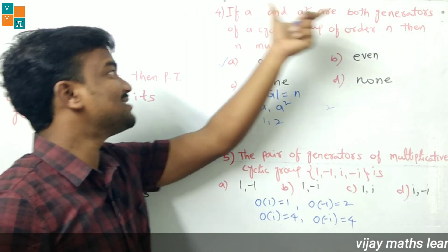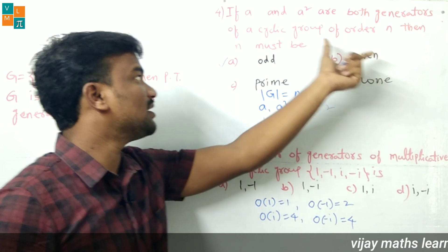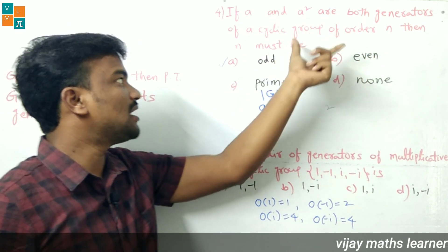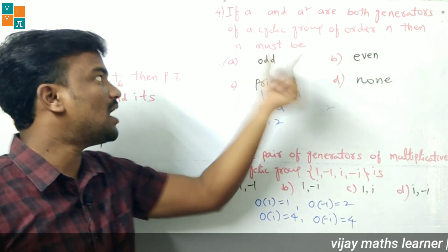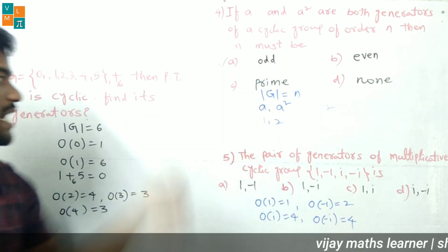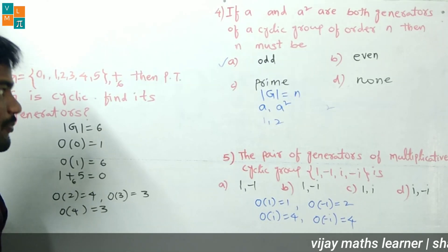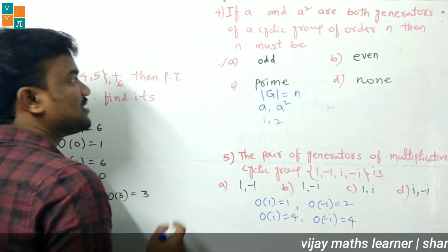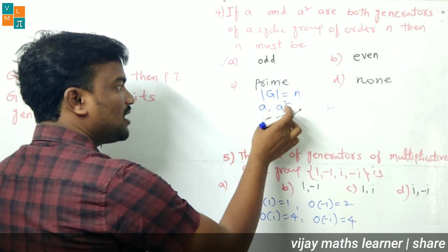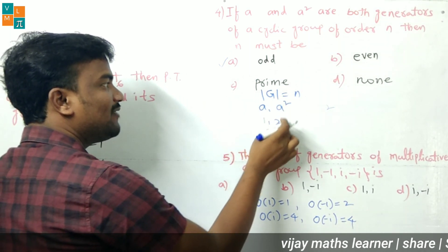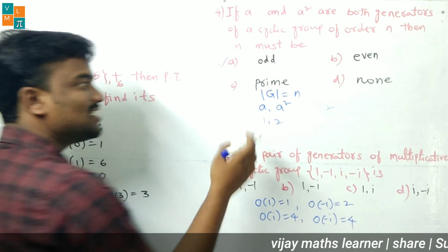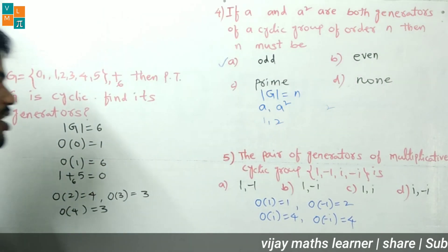For a and a² to be generators, both 1 and 2 must be relatively prime to N. This is possible only when N is odd, because gcd(2, N) = 1 only when N is odd. So N must be odd, and option A is the correct answer.